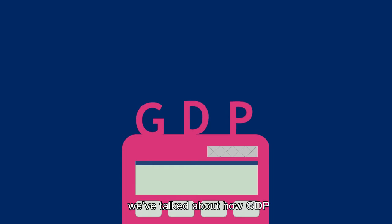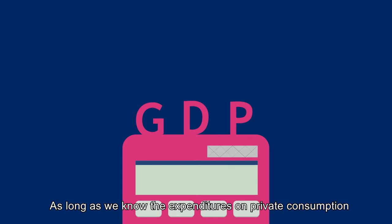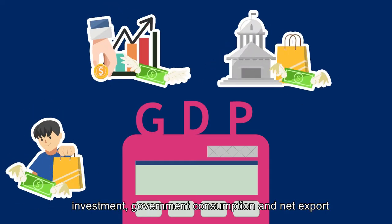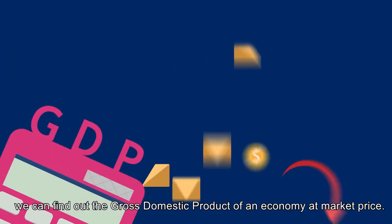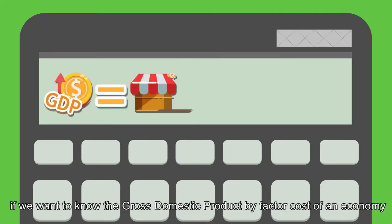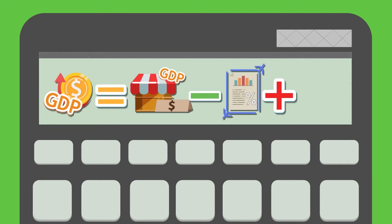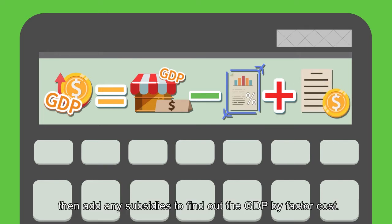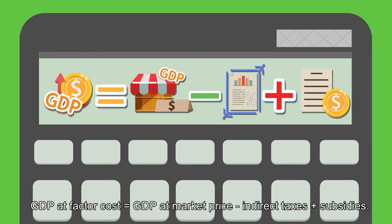So far, we've talked about how GDP can be calculated using the expenditure approach. As long as we know the expenditures on private consumption, investment, government consumption, and net exports, we can find out the gross domestic product of an economy at market price. In addition, if we want to know the GDP by factor cost, we should subtract any indirect taxes from the GDP at market price, then add any subsidies. GDP at factor cost equals GDP at market price minus indirect taxes plus subsidies.